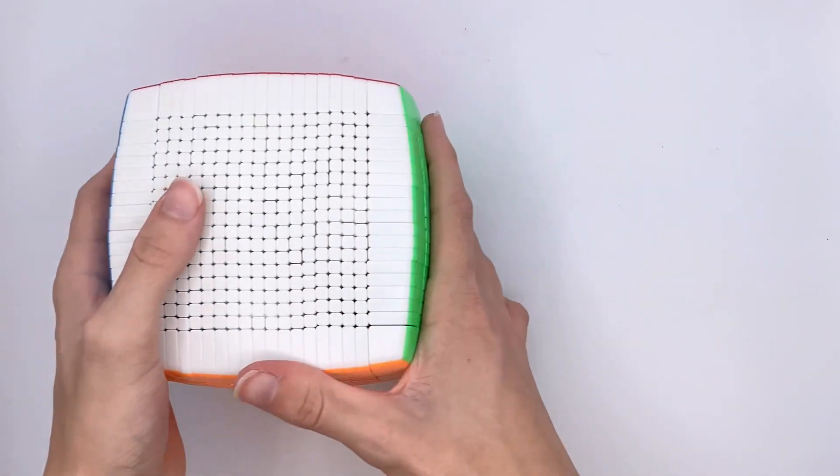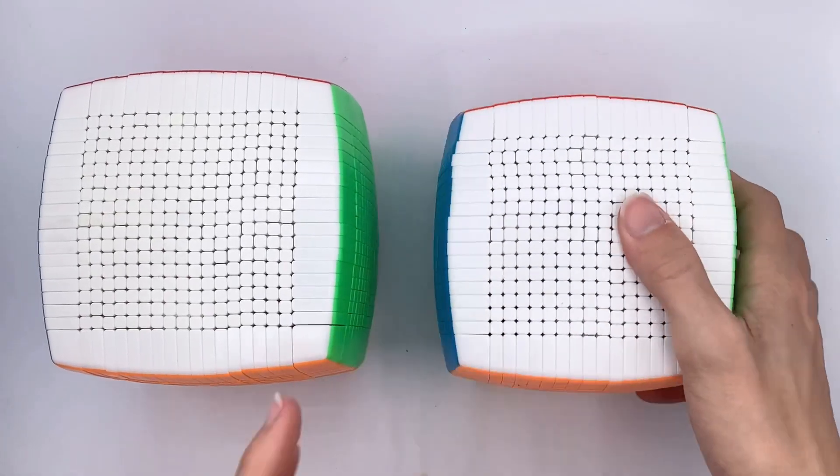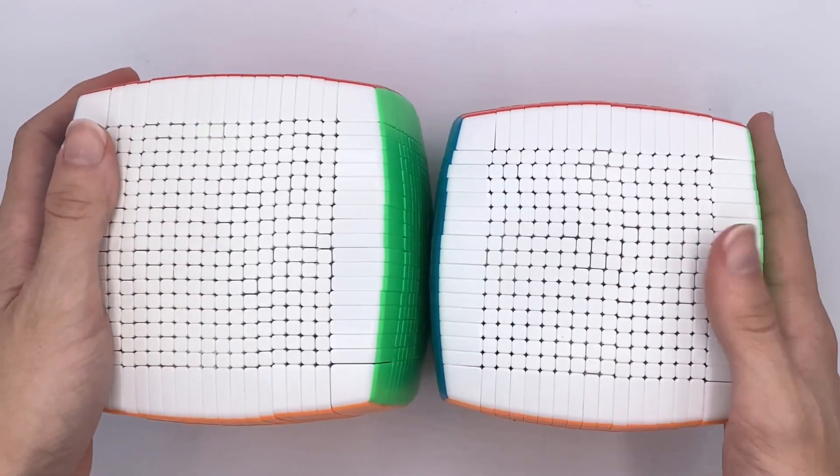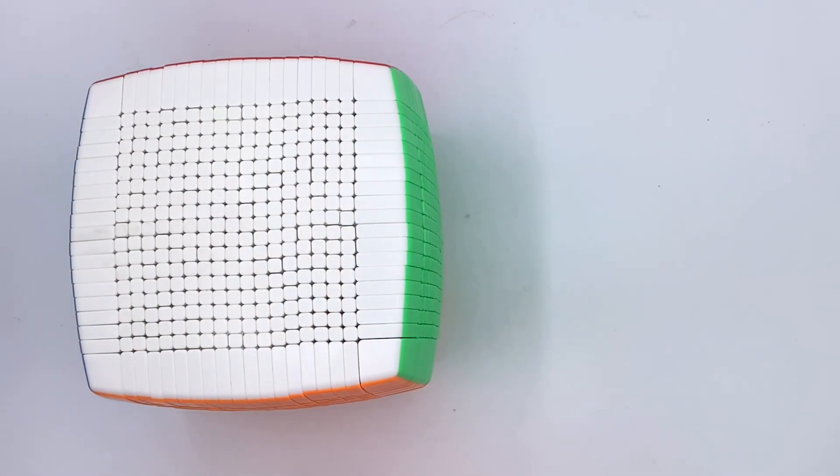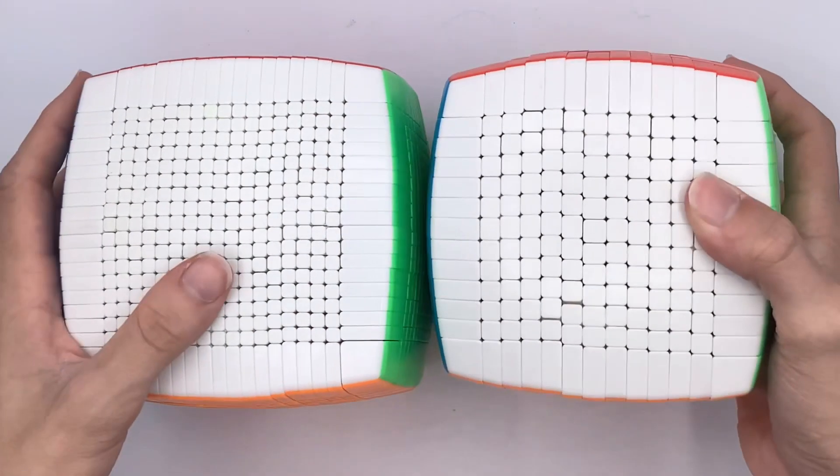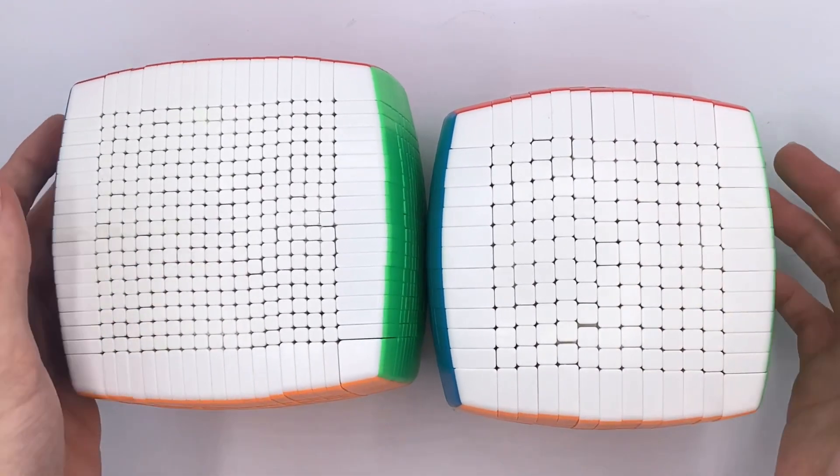Now, let's compare its size to the 17x17. As you can see, it's definitely a bit bigger. Now, let's compare it to the 13x13, which is actually a bit bigger than the 17x17. And as you can see, it's also bigger than this cube.